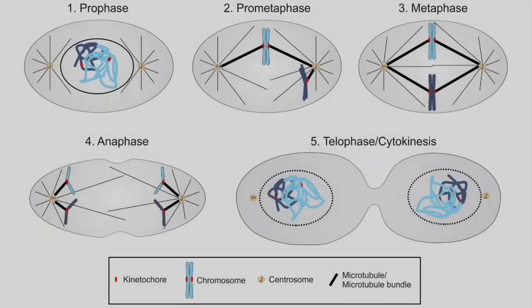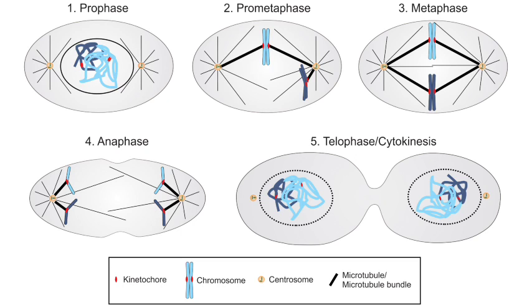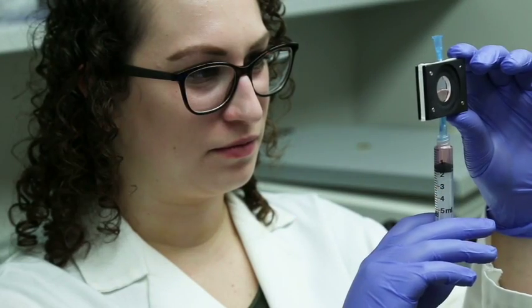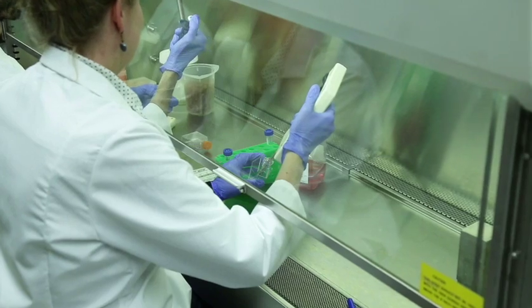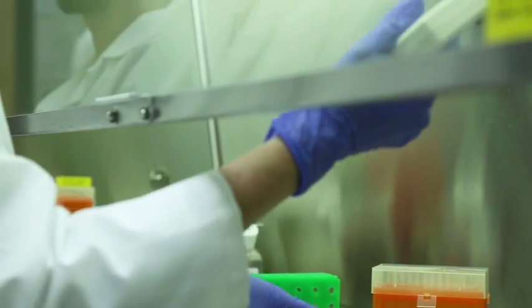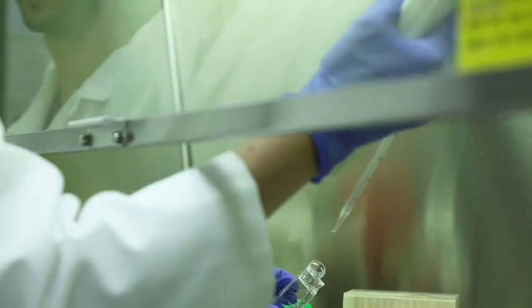Close your eyes and try to picture your cells dividing. What do you see? Your mental image may be somewhat abstract. This is a diagram from a typical high school biology textbook — it shows a series of static steps through which a cell must go in order to divide. But images of this process in living cells, captured through the power of advanced microscopy, tell a much more complete and exciting story.